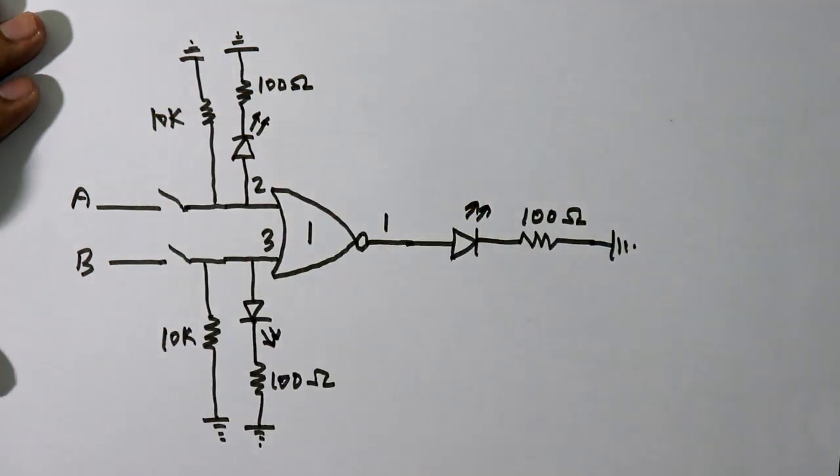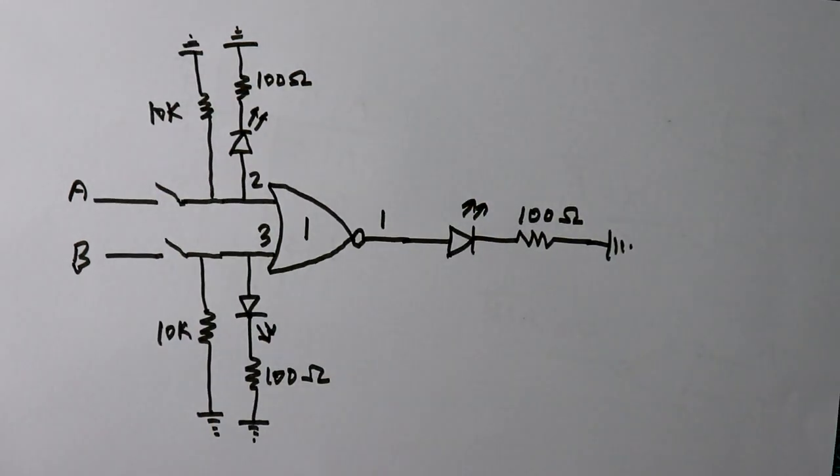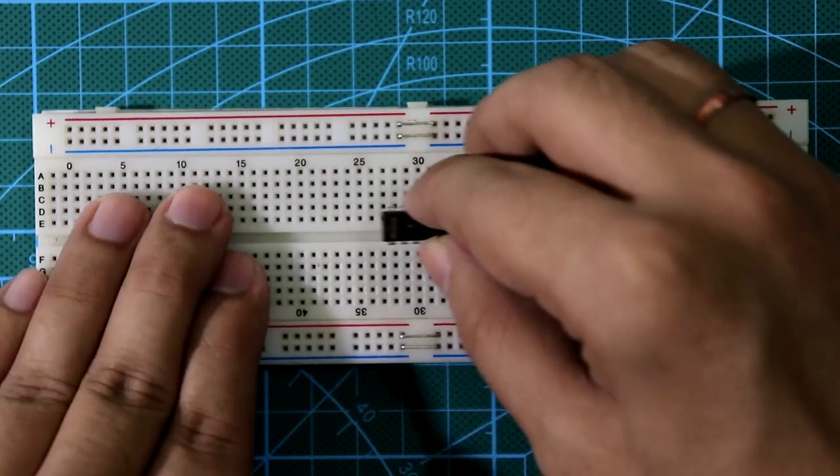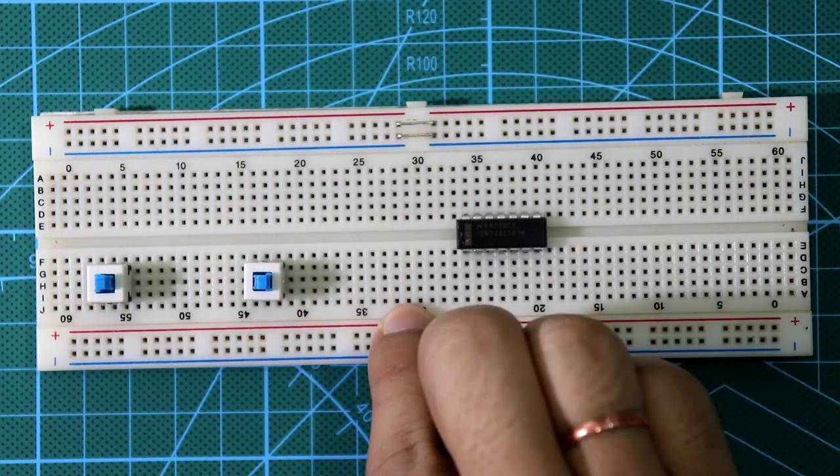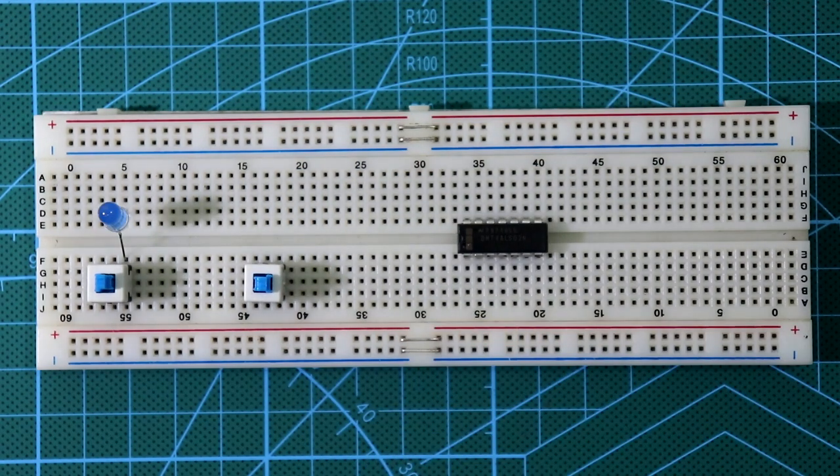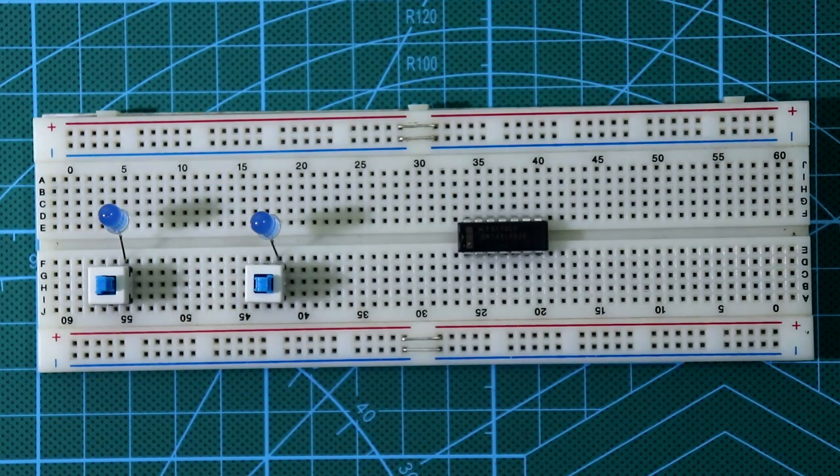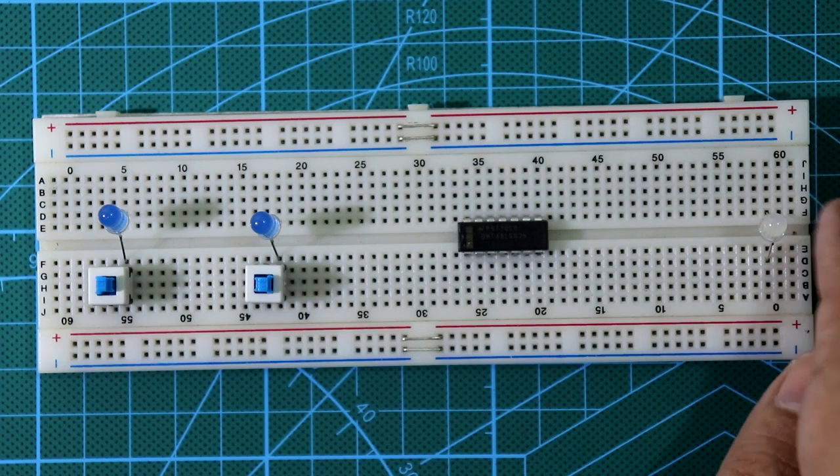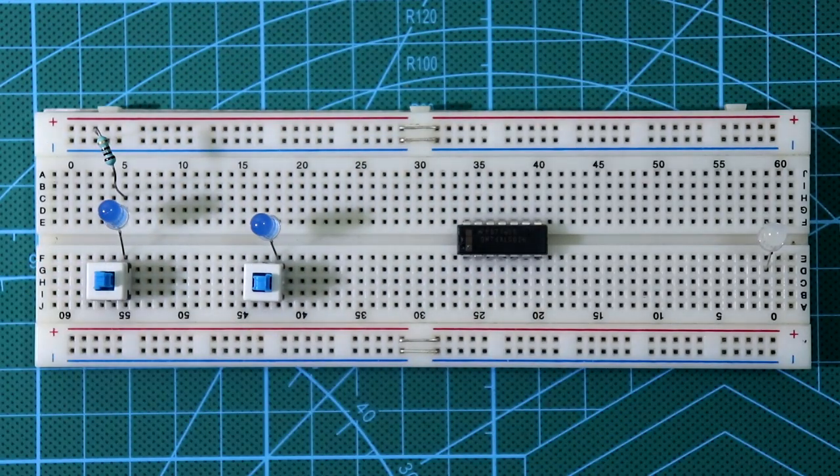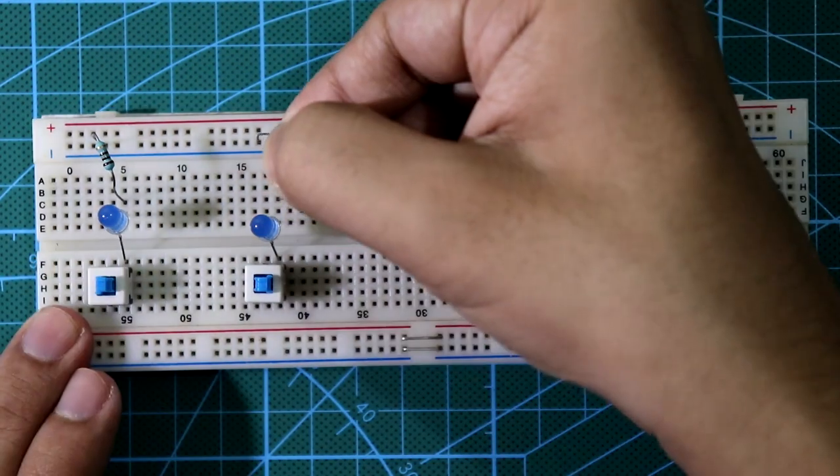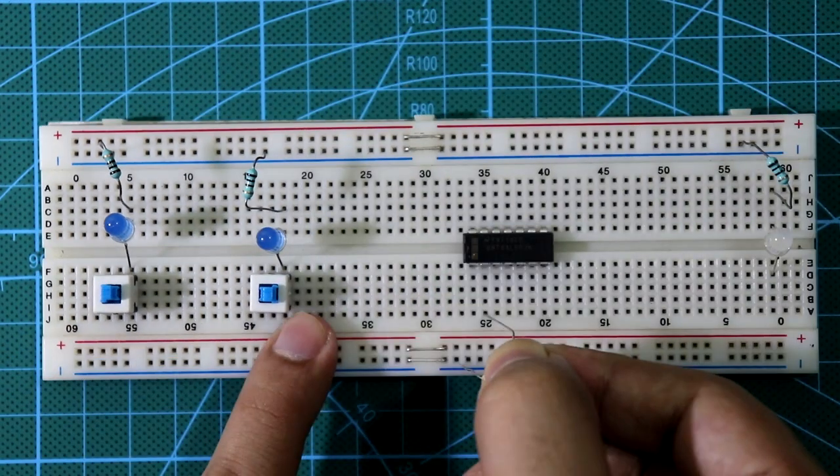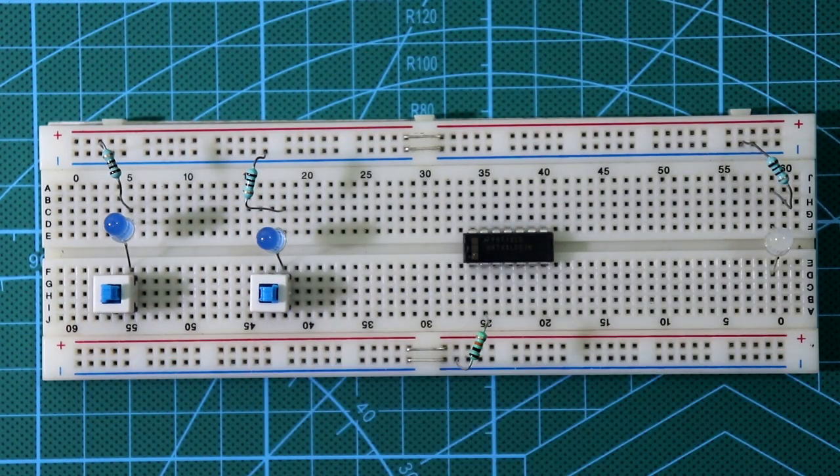So this is the circuit we have to make on the breadboard. Put the IC here, input switch 1, input switch 2, input LED 1, input LED 2, the output LED. Connect 100 ohm resistor to all the LEDs. Connect pulldown resistor to both inputs, that is pin number 2 and pin number 3.